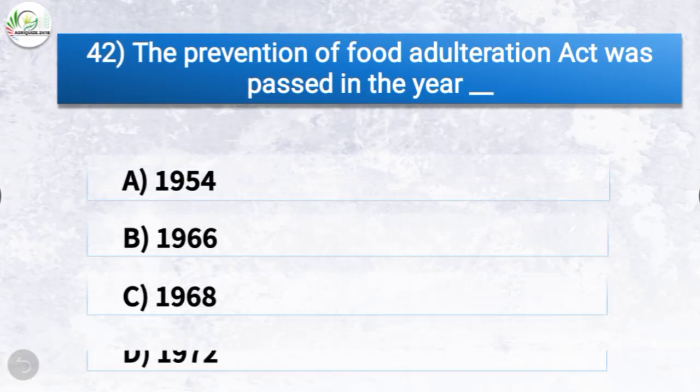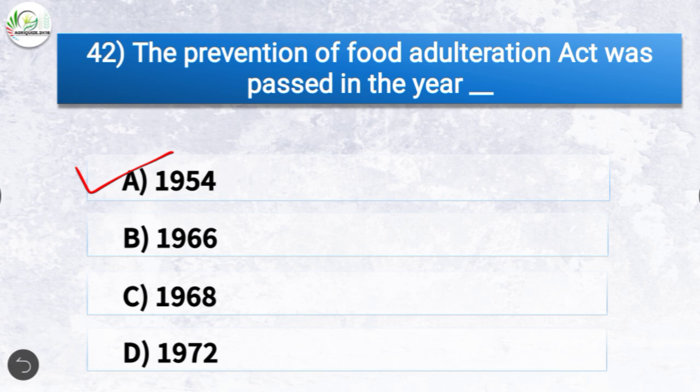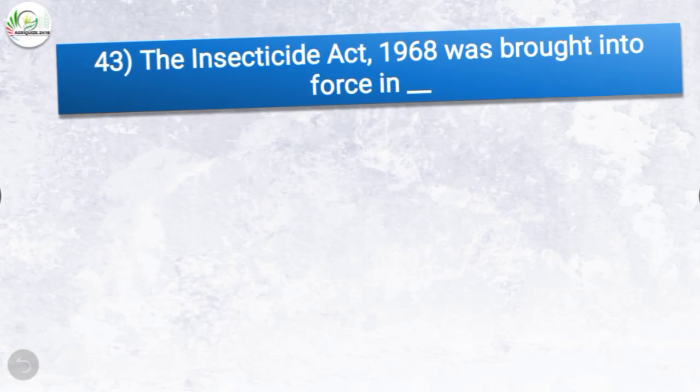Question number forty-two: the Prevention of Food Adulteration Act was passed in which year? The options are 1954, 1966, 1968, or 1972. The correct answer is option A, 1954. So the Prevention of Food Adulteration Act was passed in the year 1954.